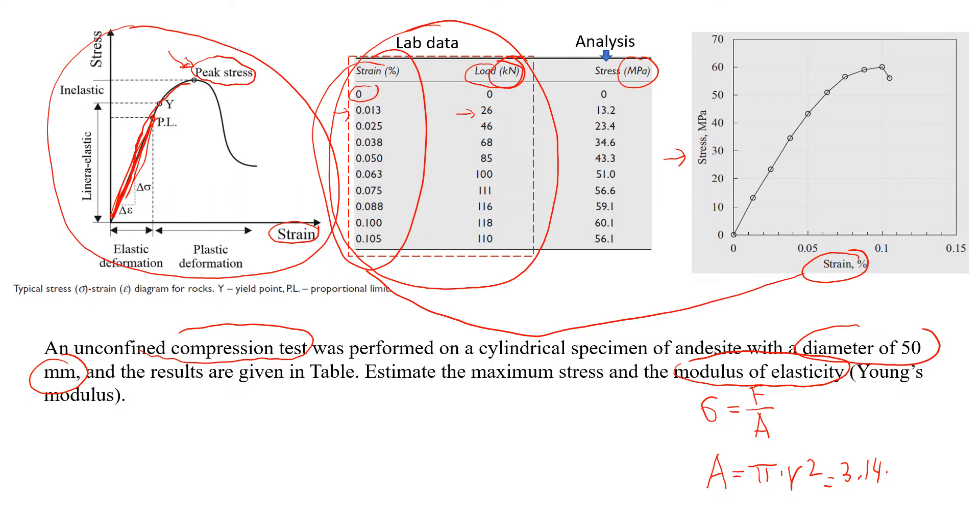That will give us approximately 1,965 square millimeters. Because we use newtons, we'll have to convert it to meters, and to convert it to meters it will be 0.001965 square meters.